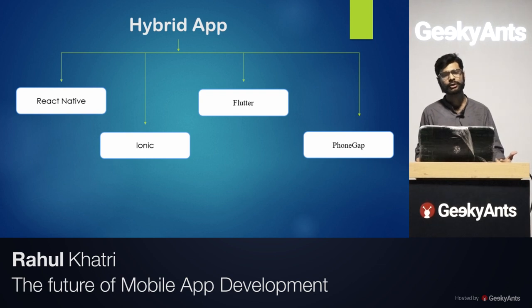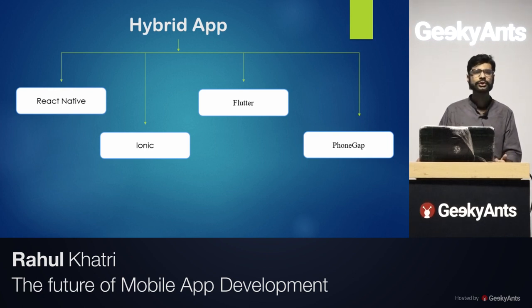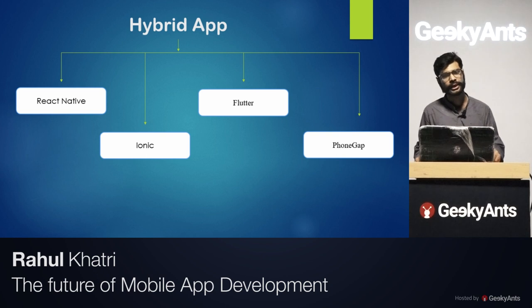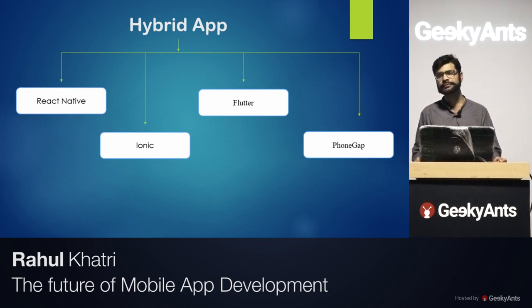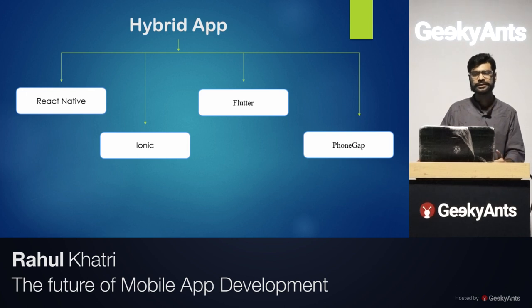Flutter renders Android native components using Material Design and iOS components using the Cupertino library. It uses its codebase to render a native feel up to a certain limit. Other platforms like Ionic and PhoneGap render native components but not to that same limit. In the future, we will see more native component support in hybrid platforms.